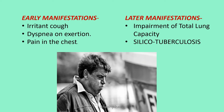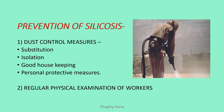The clinical features include early manifestations such as irritant cough, dyspnea on exertion, and pain in the chest. Later, there might be impairment of the total lung capacity, and silicotics are prone to pulmonary tuberculosis, which is called Silicotuberculosis.